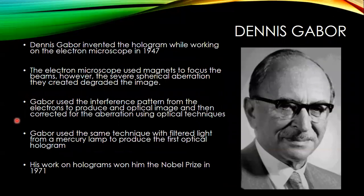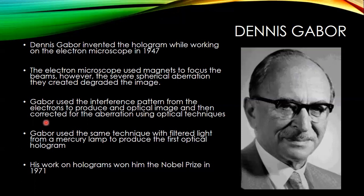The idea for a hologram was actually developed in the 1940s. Hungarian scientist Denis Gabor invented the hologram while working on the electron microscope. The electron microscope uses quadrupole magnets as lenses to focus the electron beam, and unfortunately they introduce a large amount of spherical aberration. Gabor used the interference pattern from the electrons to produce an optical image — taking the phase information from the electrons, manipulating it to produce an optical interference pattern, and restoring the optical image with corrected aberration.